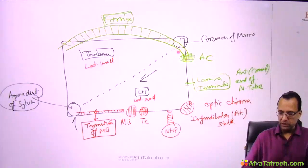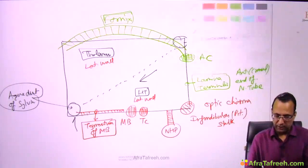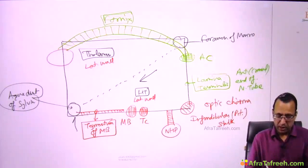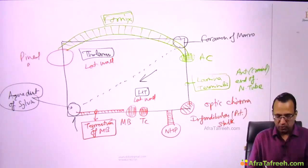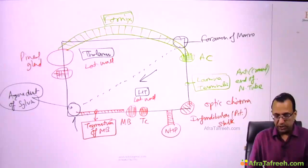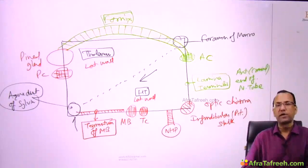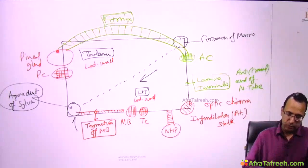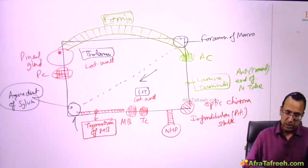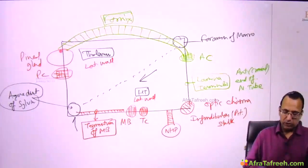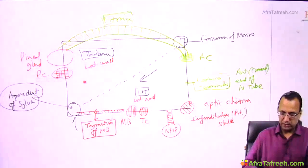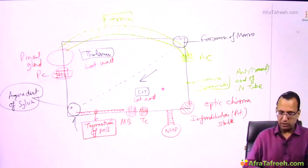Posteriorly, the boundary is formed by the pineal gland, and along with the pineal gland, the posterior commissure. The posterior commissure and pineal gland are the posterior boundary of the third ventricle. These are the boundaries of the third ventricle.